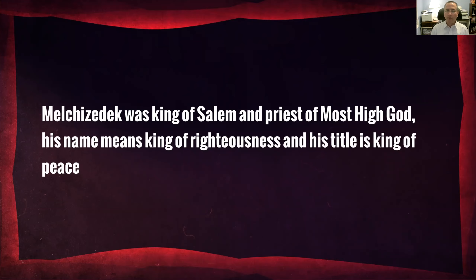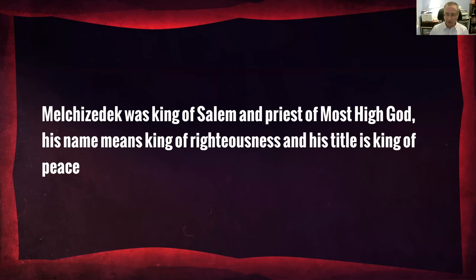He is also described as a priest of Most High God — taken literally from Genesis 14 — emphasizing that Melchizedek was not a priest of the Canaanite gods. God had made a promise to Abraham that when the sin of the Amorites was complete, his people would possess the land. The writer of Genesis makes clear Melchizedek is not one of those people digressing from God and serving other gods. He is a priest of the Most High God, which is why Abraham gives him the tithe.